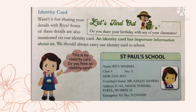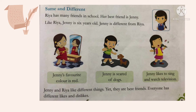Look at the picture — Riya ka identity card dikh raha hai. Uska poora naam hai Riya Sharma, class 1A, date of birth 15-1-2013, guardian ka naam Mr. Sanjay Sharma, address E-144 Ashok Towers, and her emergency telephone number. So we will always carry our identity card to school — hum apna identity card school saath mein le kar jaenge — so that even if we are lost, we can find our way back home. We will be stopping here; in the next part we will be starting with the topic 'Same and Different.'